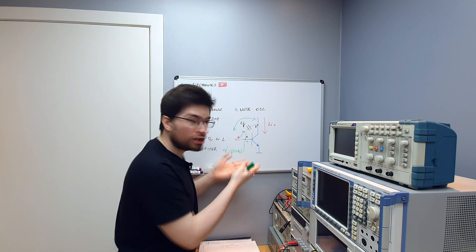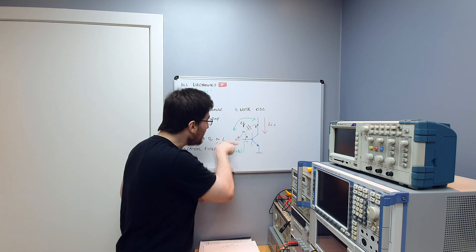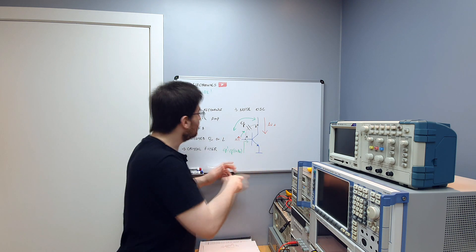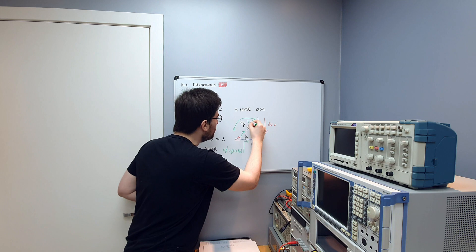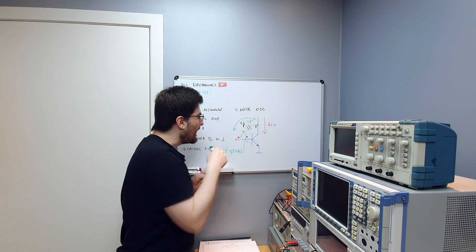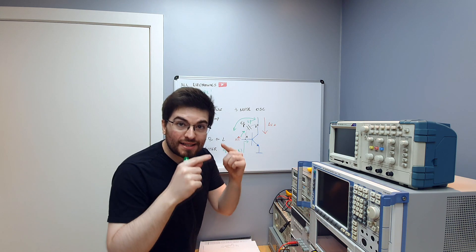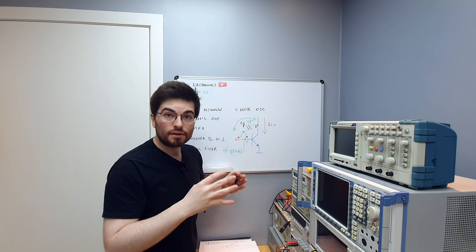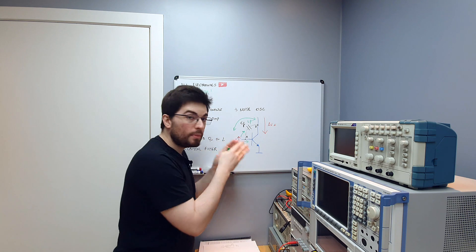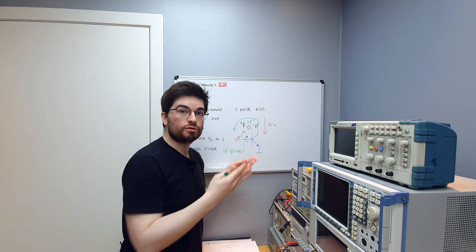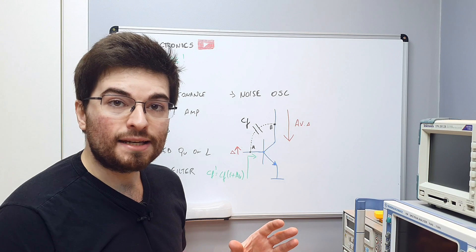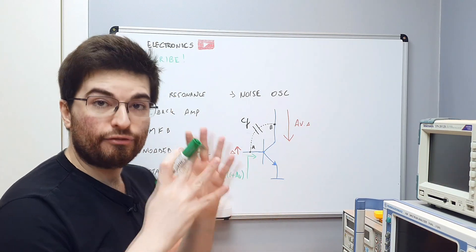Think about it. If this stage has a voltage gain of 10, the capacitance, this capacitance that let's say is 2 picofarads, will be seen from the input as 22 picofarads, more than a 10 times increase. This is why this effect dominates the frequency response of the amplifier. The neutralization technique will neutralize this effect.